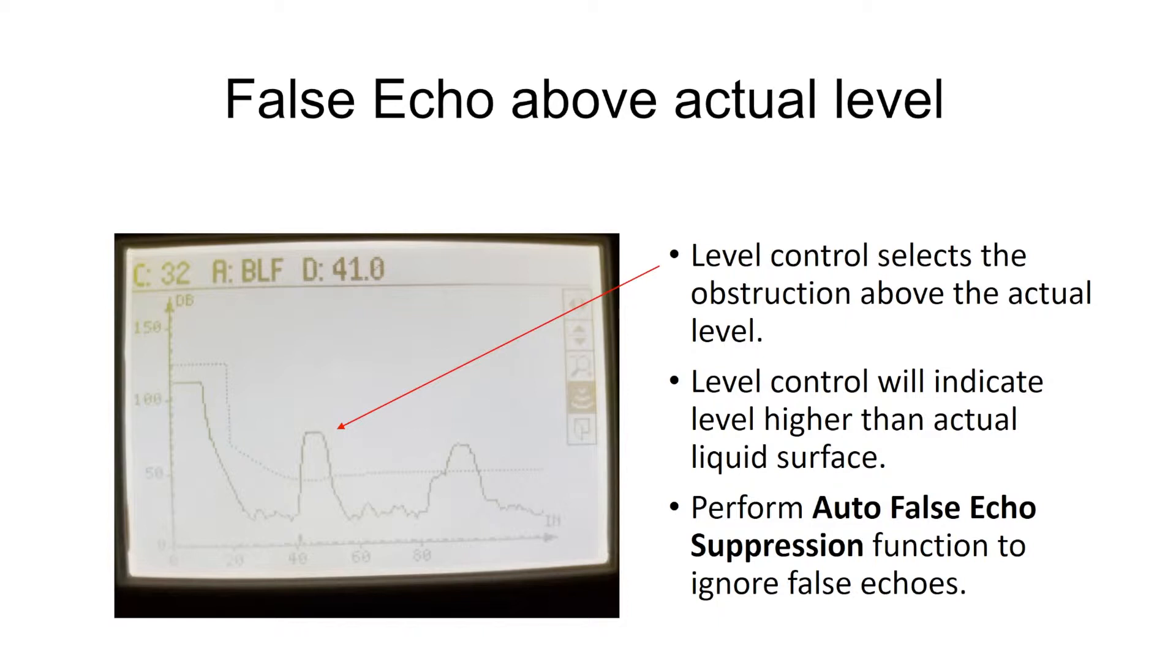Here's an example of an application where we have a false obstruction above the actual water level. This could be ladder rungs, it could be a pipe, it could be a concrete wall in a lift station, it could be many things. But in this particular application, the first echo going downward is a false echo from some type of obstruction, and the echo from the actual level is below that. Since we have a very strong echo from this false obstruction, the level control thinks that's our level. So, what do we do to get rid of it?